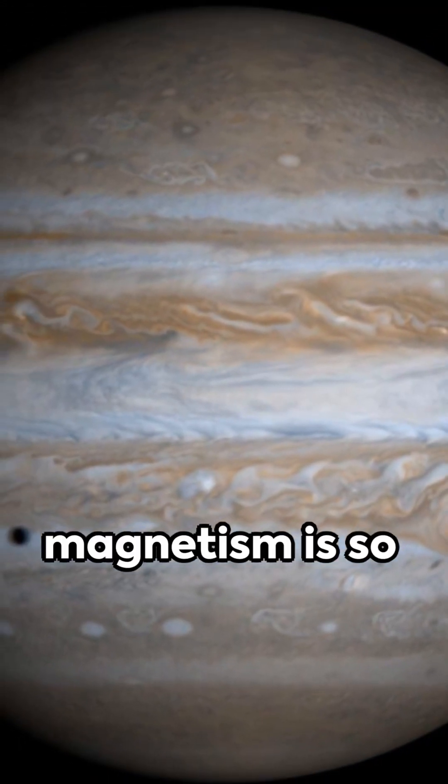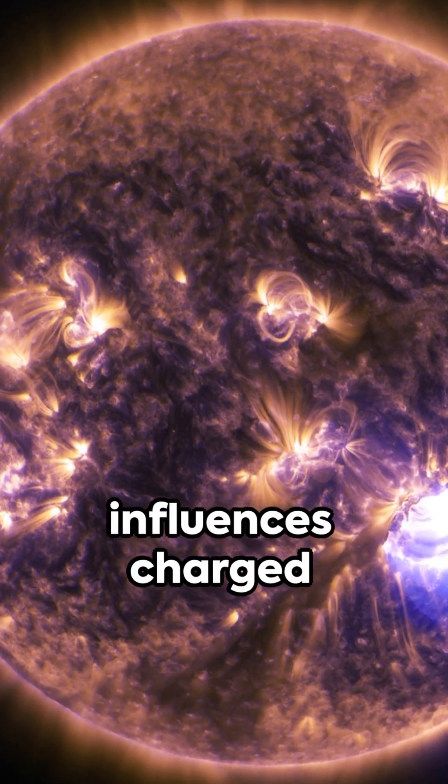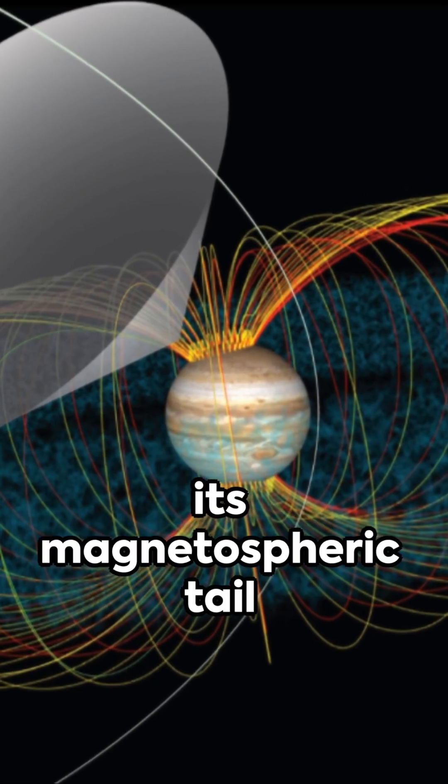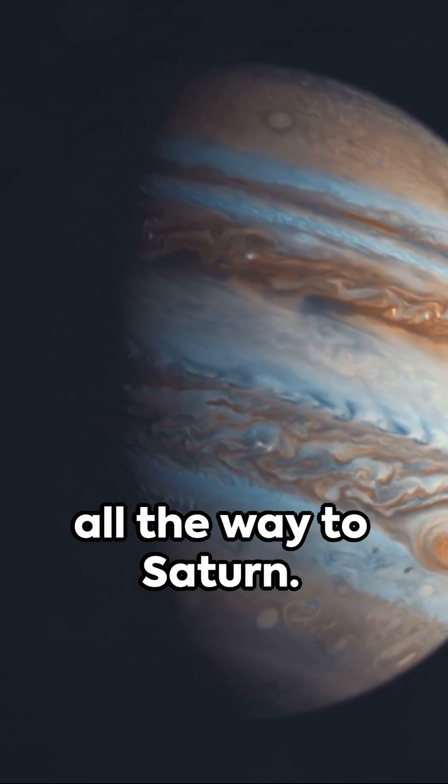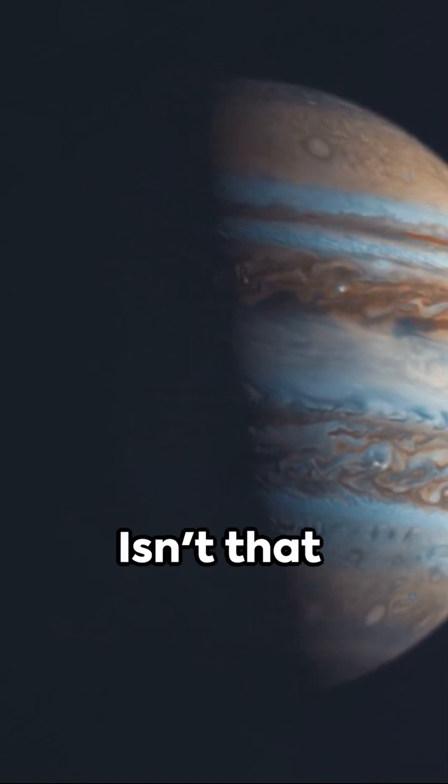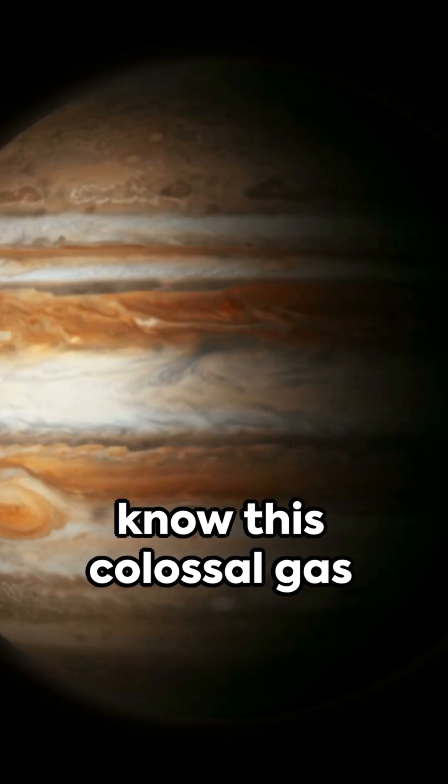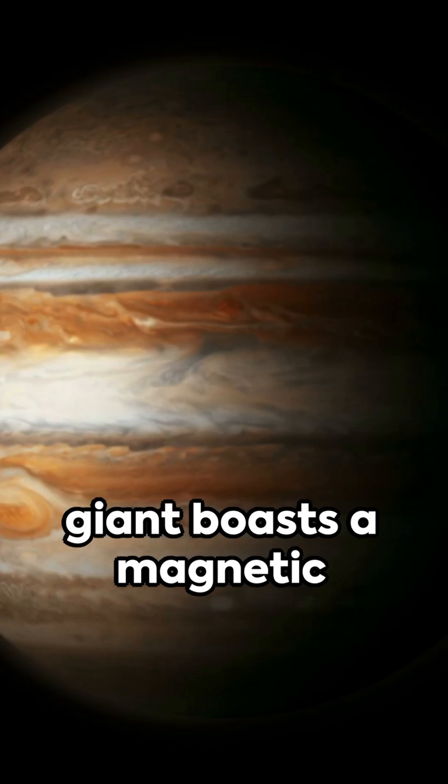Jupiter's immense magnetism is so commanding it influences charged particles, extending its magnetospheric tail to an incredible 600 million miles, almost all the way to Saturn. Isn't that mind-boggling? Did you know this colossal gas giant boasts a magnetic field 20,000 times stronger than Earth's?